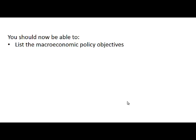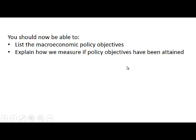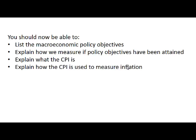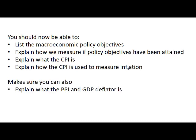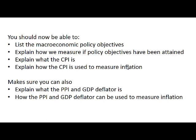You should now be able to list the macroeconomic policy objectives, explain how we measure if policy objectives have been attained, explain what the CPI is, and explain how the CPI is used to measure inflation. You must also make sure that you can explain what the PPI and the GDP deflator are, and how the PPI and GDP deflator can be used to measure inflation.